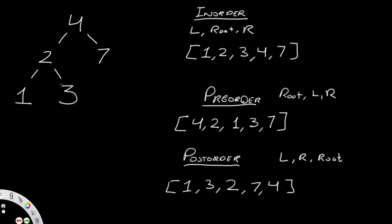So let's go through different ways of traversing through a tree. We have something called an in-order traversal. In this, we go to the leftmost node, which is one. So we get one, then we go to two, then three, then four, and then seven. You go to the leftmost node, then the root, and then you go right. So here we go to the leftmost which is one, then its root which is two, then its right value which is three, then back to the root to get four, and then seven.